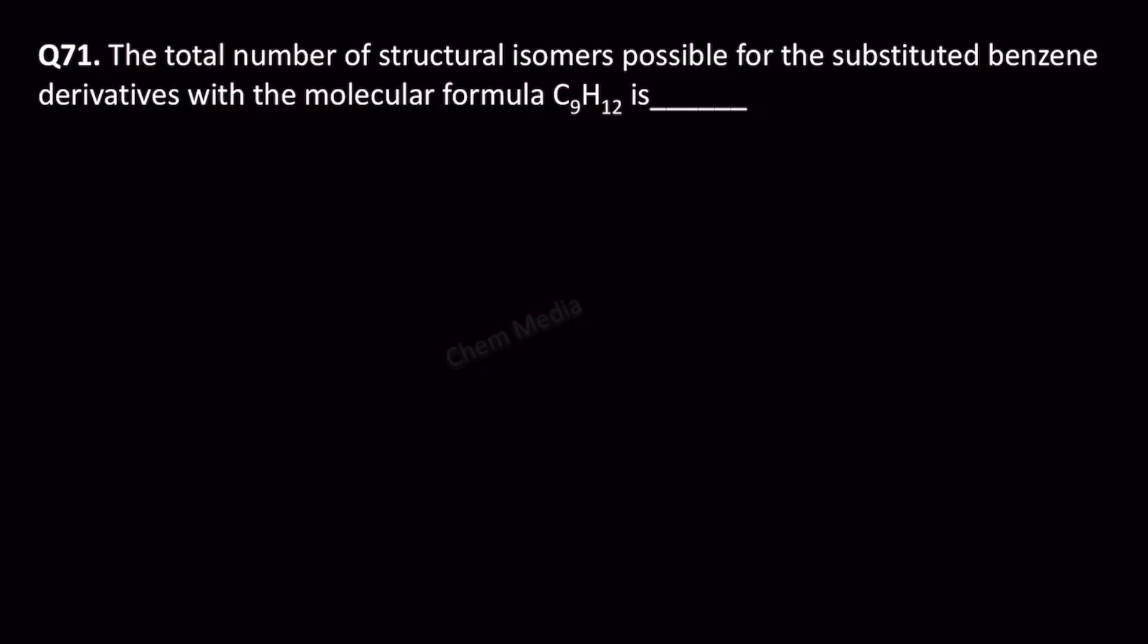Hello everyone, here is a question based on structural isomers. What is the total number of structural isomers possible for the substituted benzene derivatives with the molecular formula C9H12?